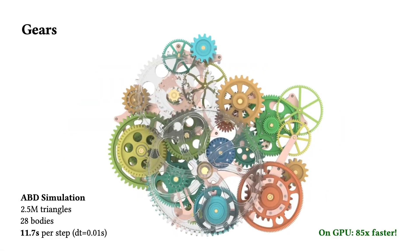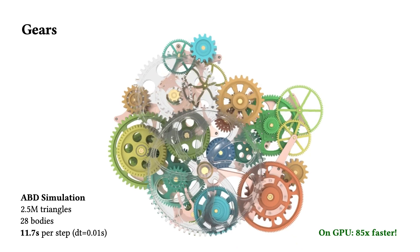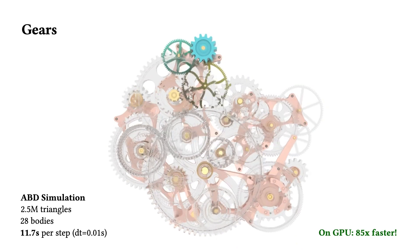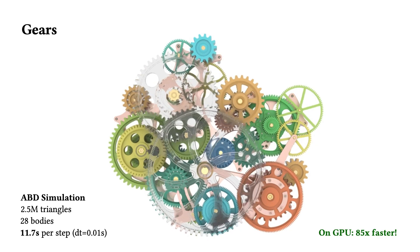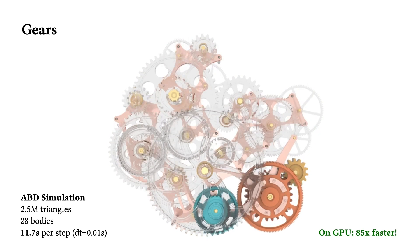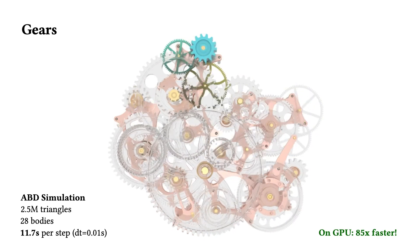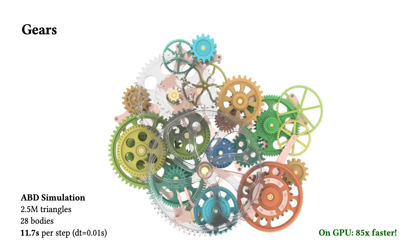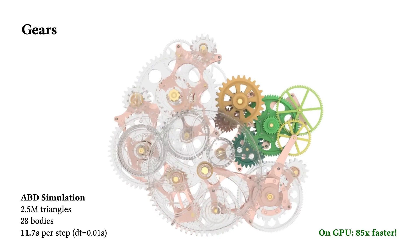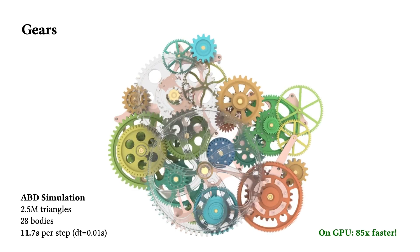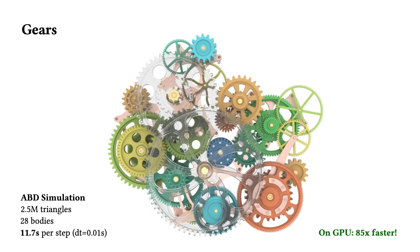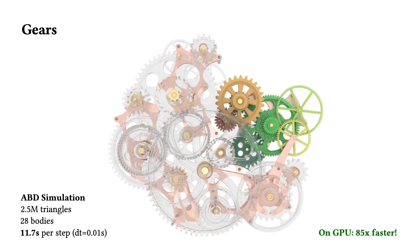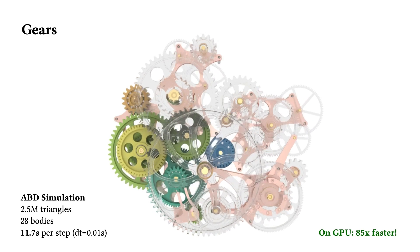ABD's combined scalability and robustness can be pushed to the extreme. In this challenging stress test example, we simulate a complex 28-gear system with frictional contact resolving all interactions. Here, the surface meshes contain well over 2.5 million triangles, with over a quarter in contact at every time step. ABD is able to simulate this model at 11 seconds per time step, with large time step sizes, while on the GPU, we've successfully accelerated it further by 85 times.